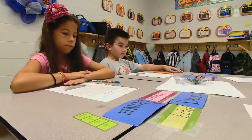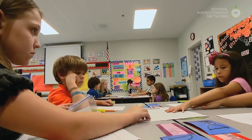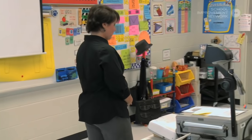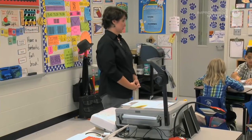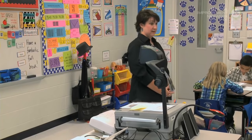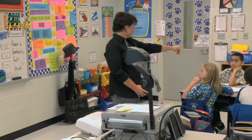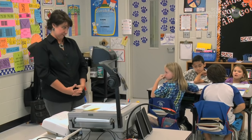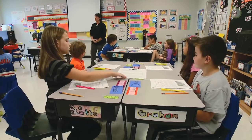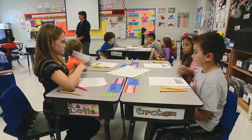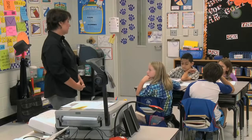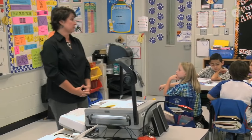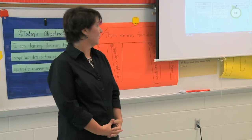Now it's time for us to work on some text-dependent questions. We are going to play bingo while we answer the questions today. You have some spiders that you're going to use as your markers. Your entire group is one team. I will tell you what row or column we're working on. Your team is going to try to find the answers to those questions. They must be highlighted in the text and you must be able to tell me where you found it with the paragraph and the sentence number.